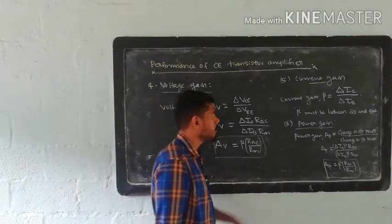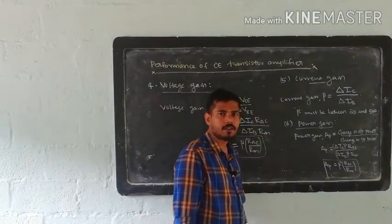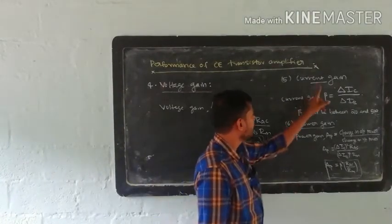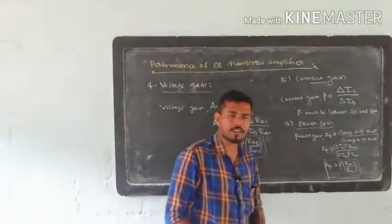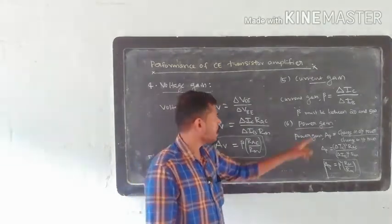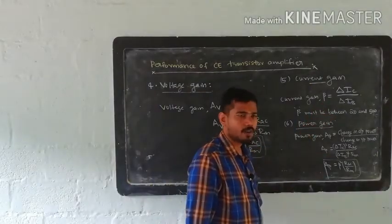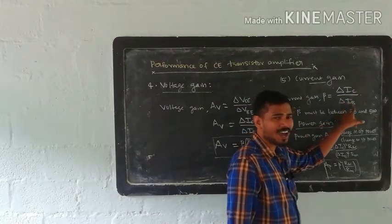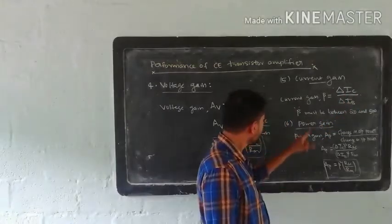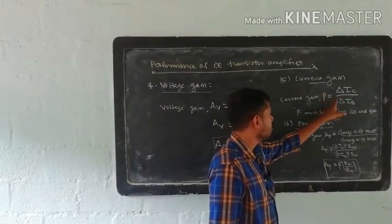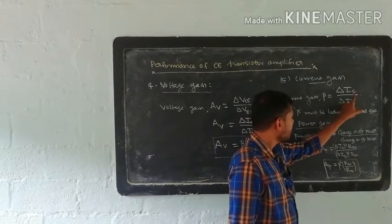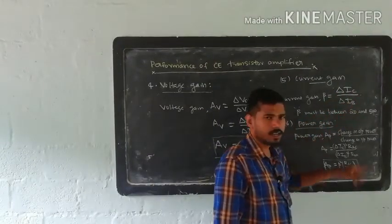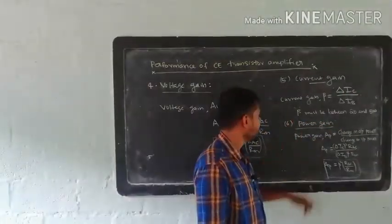Current gain: this is the CE amplifier's performance in terms of current amplification factor. The current amplification factor beta of a common emitter configuration is the ratio of change in collector current to the change in base current — output current to input current ratio — which is the current gain.